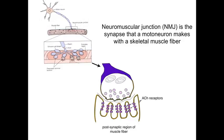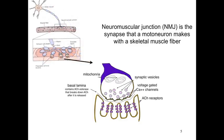On the postsynaptic side, there are lots of acetylcholine receptors that are embedded in the muscle membrane. In addition, there is a basement membrane called the basal lamina, in which molecules of acetylcholinesterase are embedded.